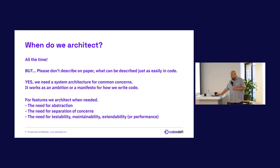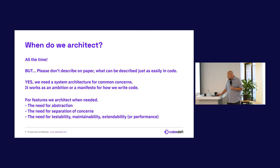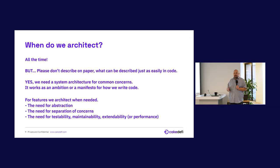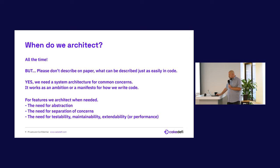When do we architect? All the time. As soon as a new feature is being built, you are free to pick it up and help architect. Some are better at it than others, but it's just a skill — anyone can learn and contribute. Please don't describe on paper what can be described in code. We don't architect a feature that takes 50 lines of code — we only do it when necessary. We architect for developers, and yes, we need system architecture for common concerns. You can't say 'this is the way I like to do it so I'm going to do it my way.'